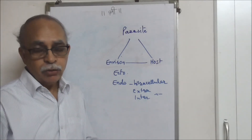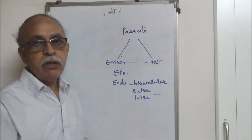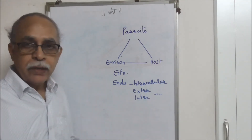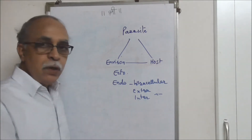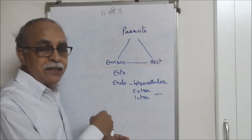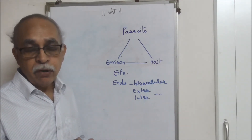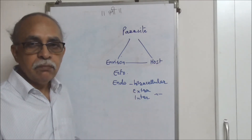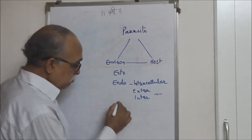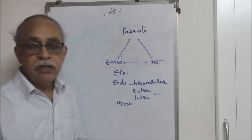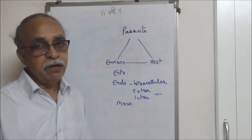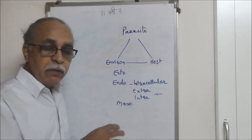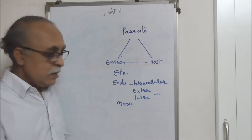Intracellular parasites invade not only the body of the host but the cells themselves, and continue to grow there, causing disease. Extracellular ones invade the body of the host but stay outside their cells — maybe in the lymphatic fluid, body fluid, or blood. Most helminthic infections are of this kind. Then there is a variety called mesoparasite, which is partially embedded in the body of the host and partially stays outside. An example could be a parasitic copepod, which invades the body only partially.